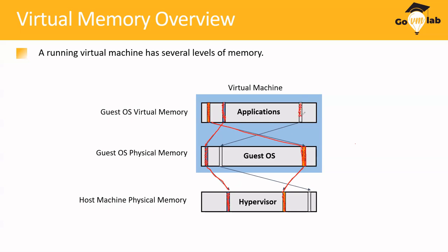When an application asks for more memory pages, it requests them from the guest operating system. The guest OS says it has memory and writes the pages — but those pages are virtual memory and must be backed by physical memory. That is where the physical memory pages are written, and this is how memory allocation works in the virtual world.